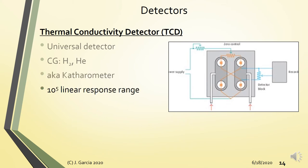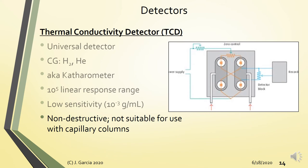Universal detectors like TCD have the lowest sensitivity among GC detectors — around 10⁻³ grams per mL. However, TCD is non-destructive, so if you need to collect eluted components, you can use TCD. It is not recommended for capillary columns and is normally used with packed columns.